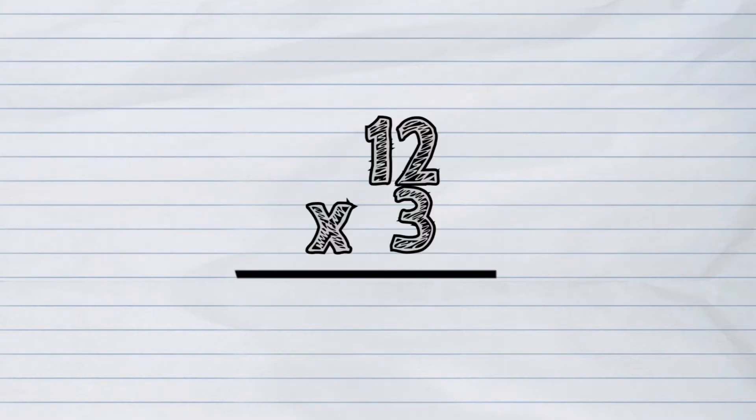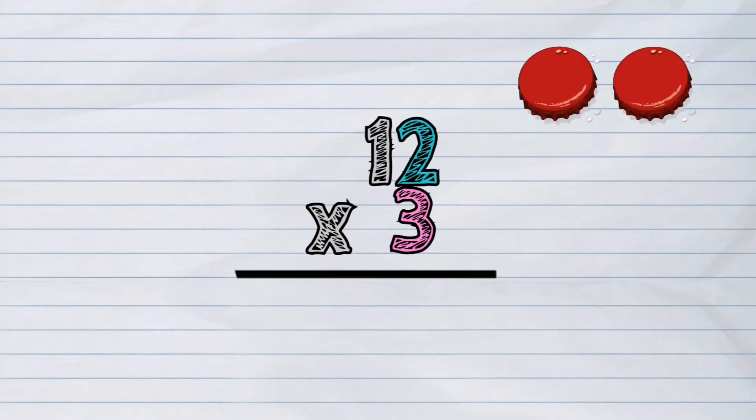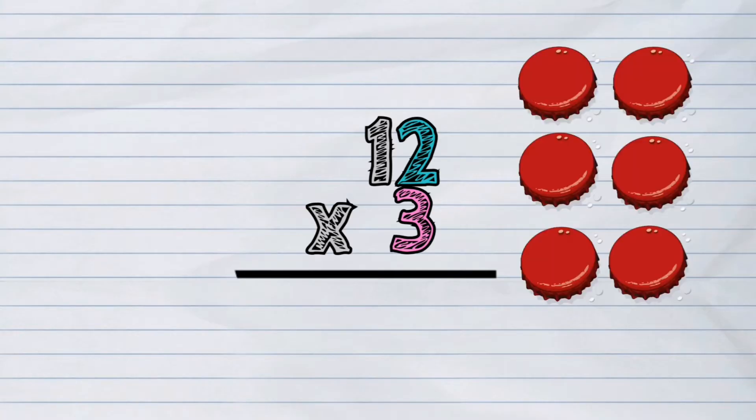Let us now start multiplying the numbers by columns. Multiply the ones by 3. 2 times 3. The answer is 6.